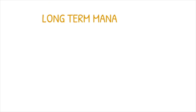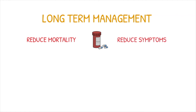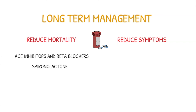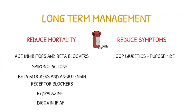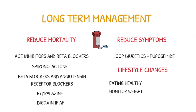After stabilisation, longer term management for heart failure can be split into drugs that reduce mortality and drugs that control symptoms. Drugs that reduce mortality in systolic heart failure are ACE inhibitors and beta blockers, given together as first line. We can also give aldosterone antagonists such as spironolactone. If an ACE inhibitor is intolerable, beta blockers and angiotensin receptor blockers are the first line. We may also try hydralazine, and digoxin is used if there is coexisting atrial fibrillation. Drugs that control symptoms include loop diuretics to manage fluid overload. Alongside medication, lifestyle changes such as eating less salt, monitoring weight, and exercising should be tried.